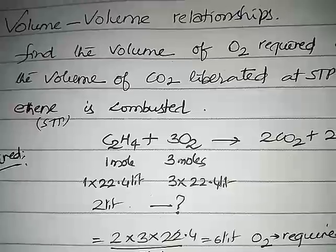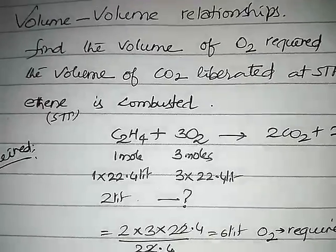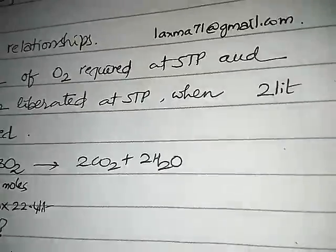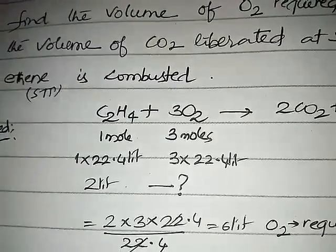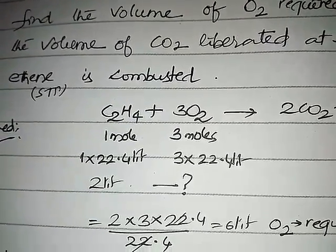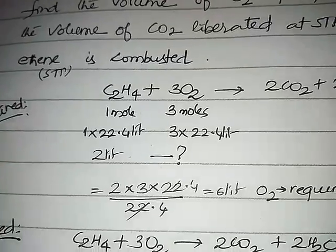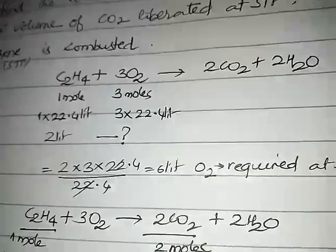So the question is very simple. In our question it is given two liters, so two liters requires how much? Two times three times 22.4 by 22.4, that is nothing but six liters. Six liters of oxygen is required at STP for this two liters of ethene at STP conditions.